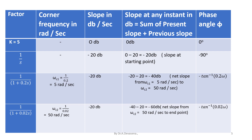Let us analyze the factors one by one. For factor k = 5, there is no corner frequency and the slope in dB is 0 dB at any instant. The phase angle value for the constant is 0 degree. For the factor 1/s, the corner frequency is none; it has a slope of minus 20 dB. The slope at any instant is the sum of present slope plus previous slope: 0 dB plus minus 20 dB equals minus 20 dB. This is the slope at the starting point.